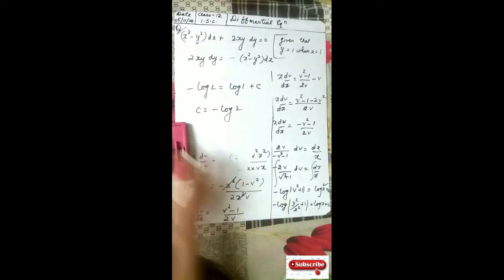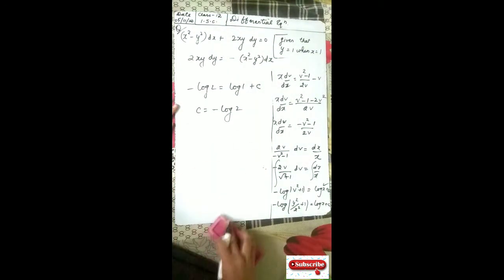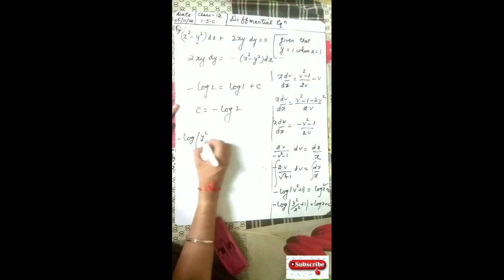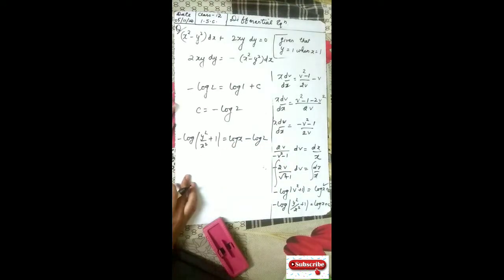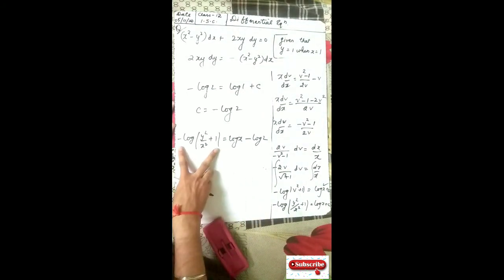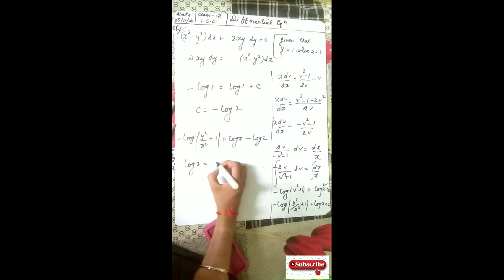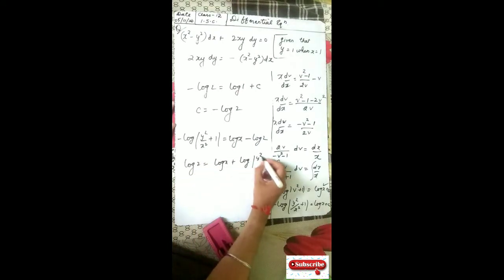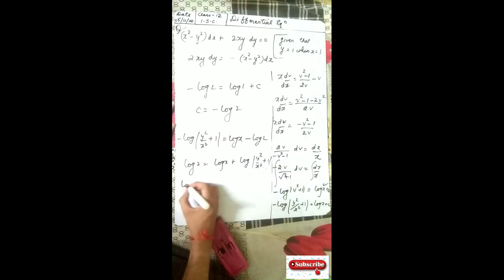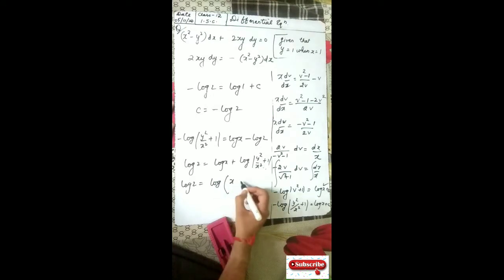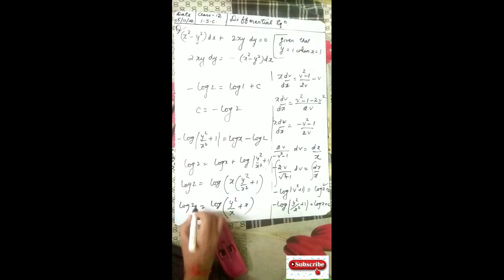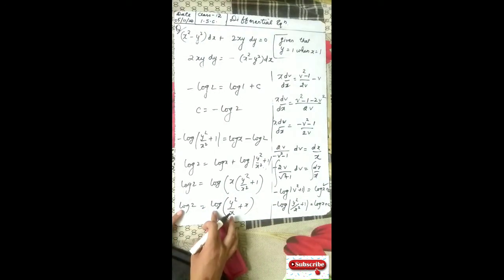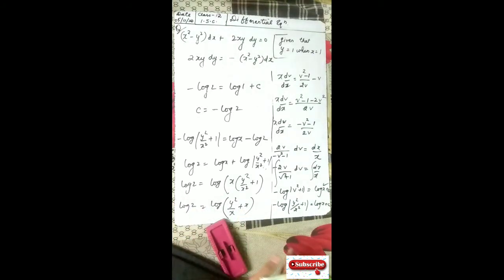Come back to the step: minus log(y²/x² plus 1) equal to log x minus log 2. Take the minus term to that side and log 2 here. So log 2 equals log x plus log(y²/x² plus 1). Using log m plus log n equals log(mn), you get log of (y² upon x plus x) equal to log 2. On comparing, this gives the final answer.